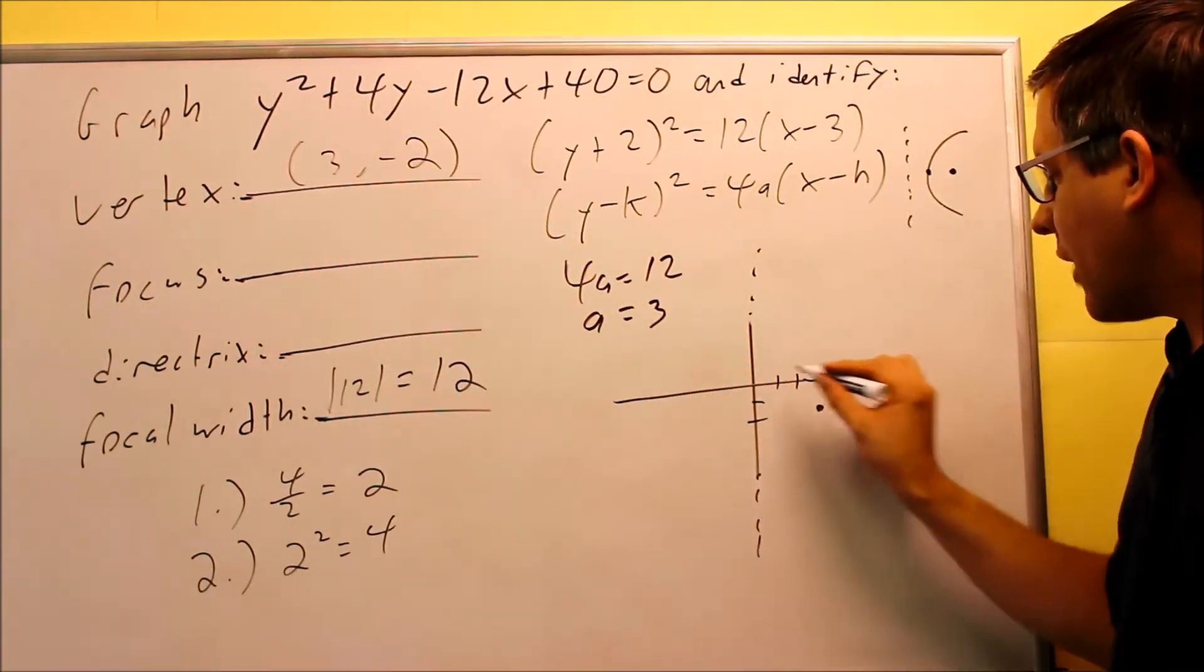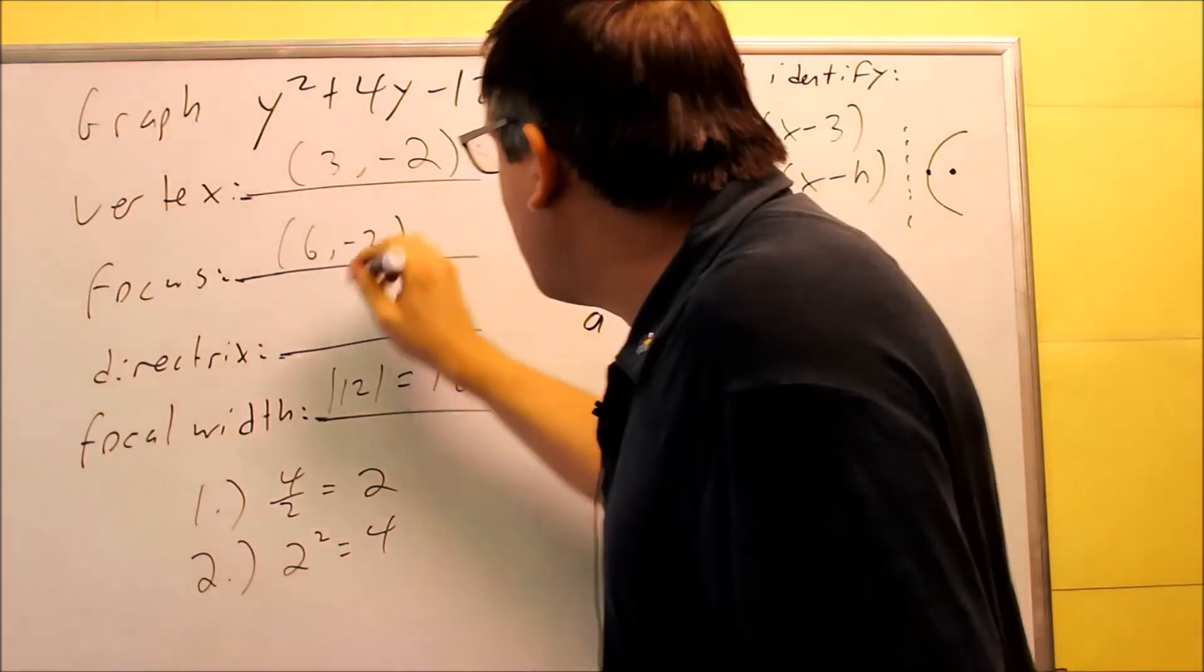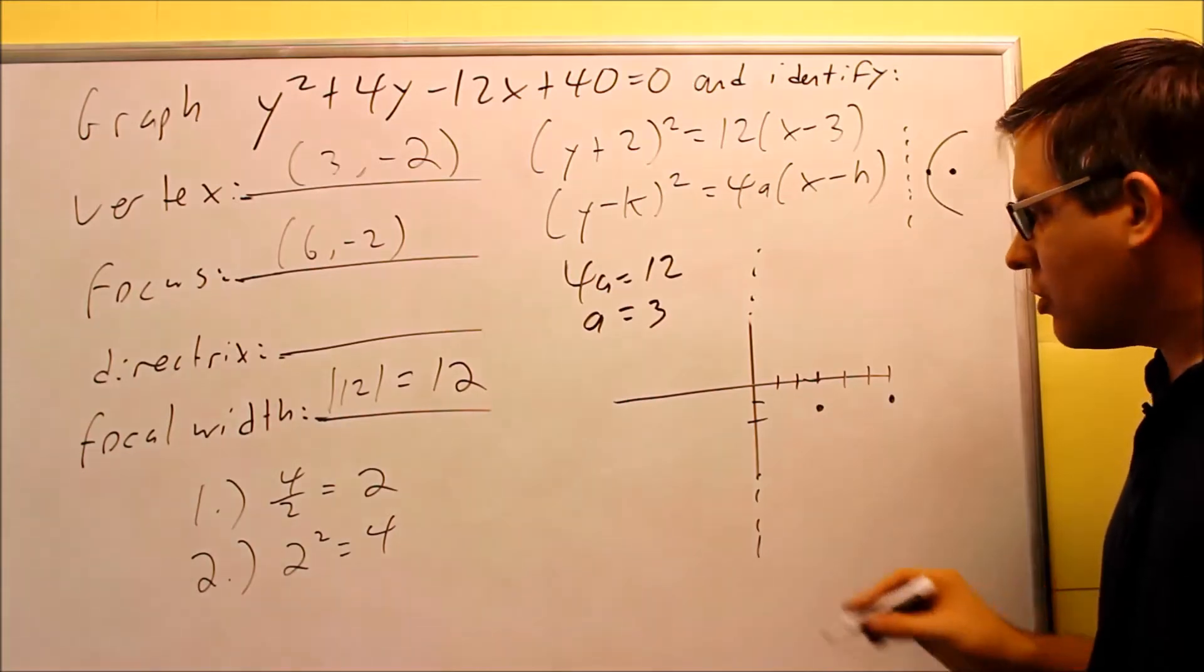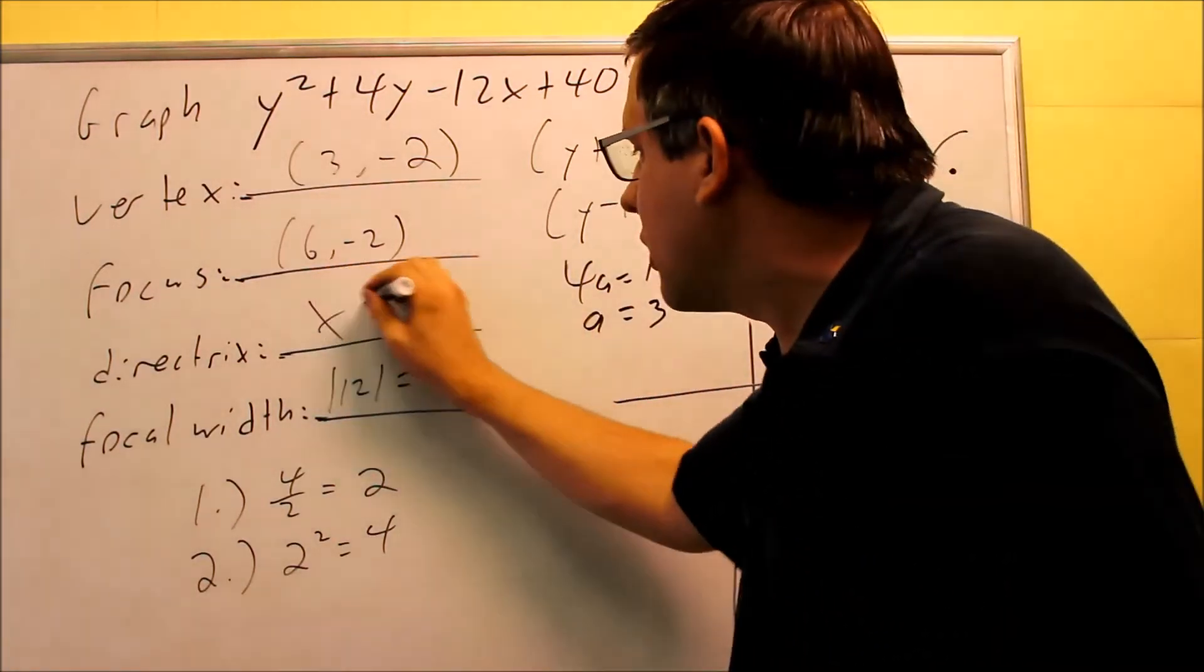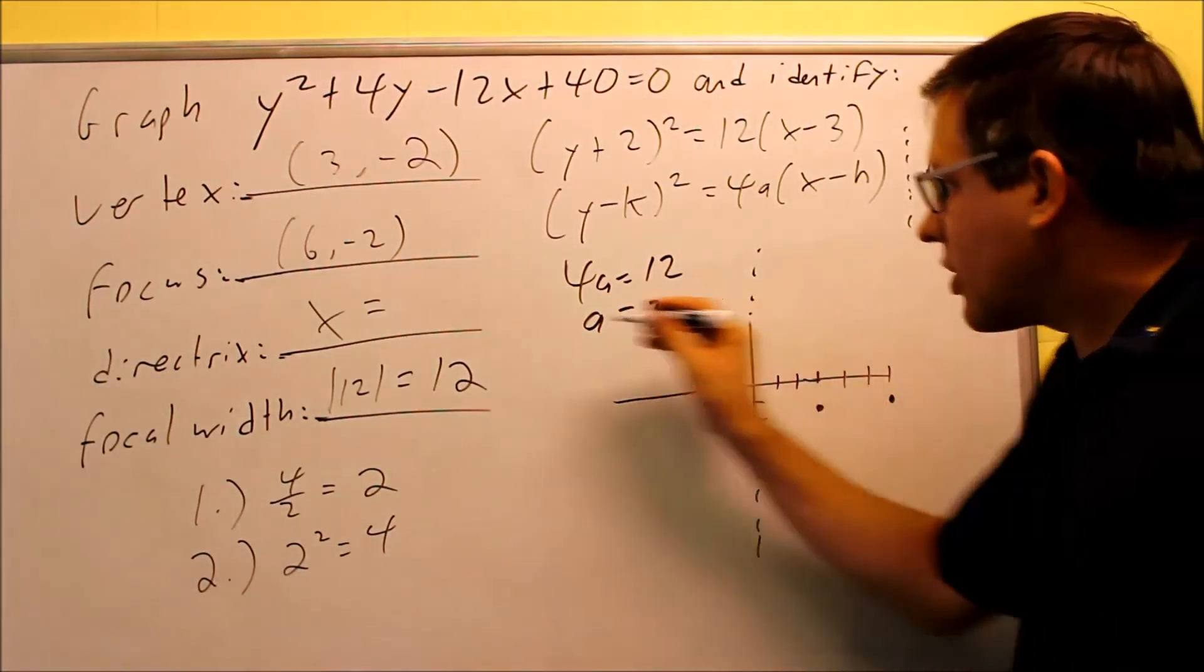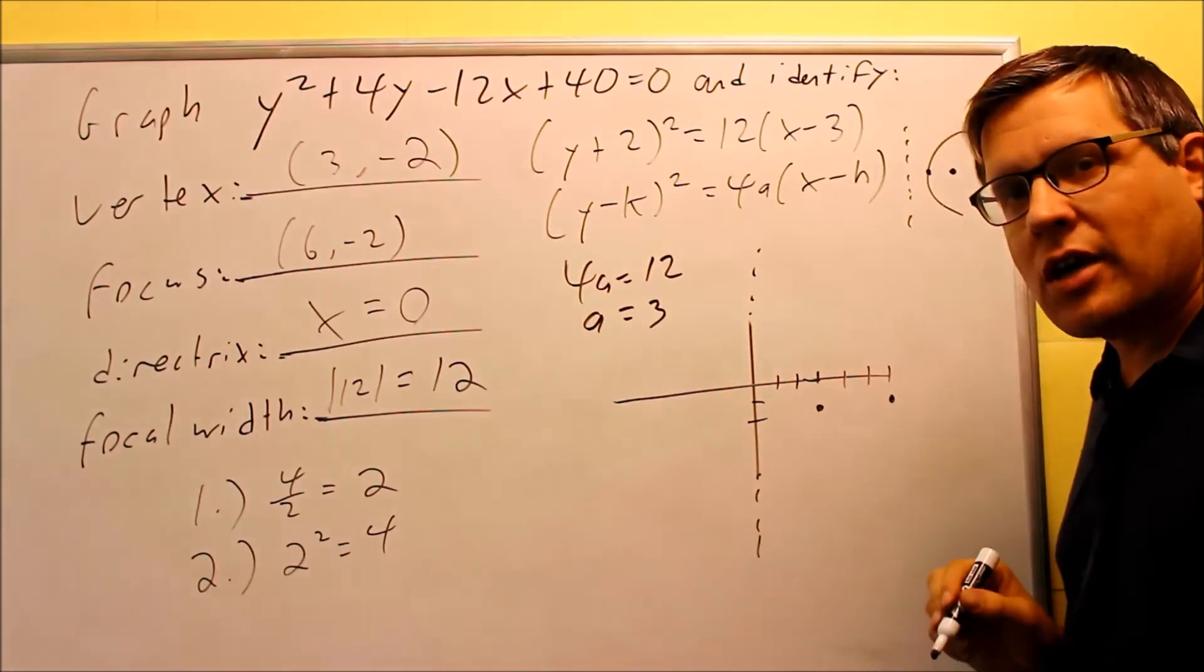So focus, I can read that off the graph. That's going to be 6, negative 2. So 6, negative 2. That's my focus, my directrix, since it's on the y-axis, that's going to be x equals because it's a vertical line. And that's going to be x equals 0. So now I have all the information that they asked for.